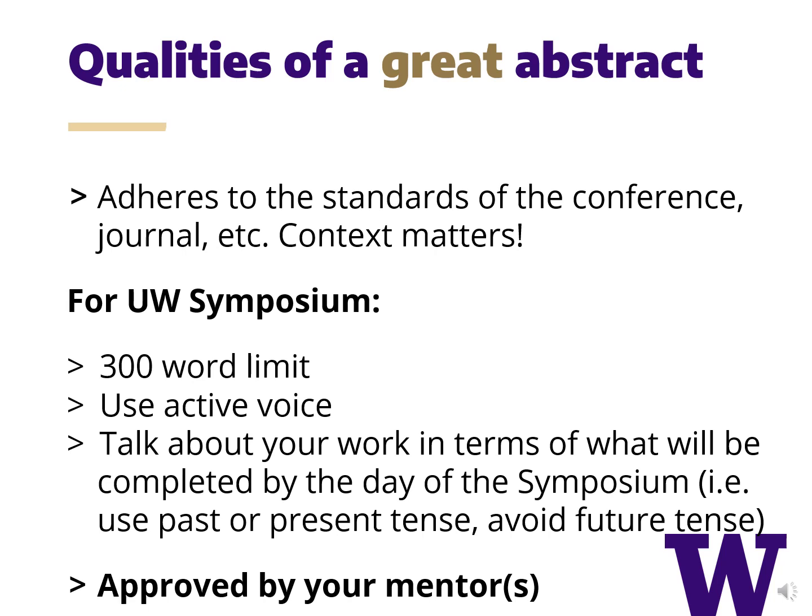A great abstract is one that adheres to the standards of the conference or journal. For the undergraduate research symposium, the abstract should not exceed 300 words in length. We also ask that you use the active voice in your writing. For example, you should use language like 'we conducted a literature review' instead of 'a literature review was conducted.' When writing your background and methods, be careful to not use statements like 'will be.' Instead, talk about your work in terms of what will be completed by the day of the symposium by using past or present tense. For example, you could say 'in this study, we use X methods to explore XYZ,' or 'in this project, I conduct a literature review of,' which are both present tense.